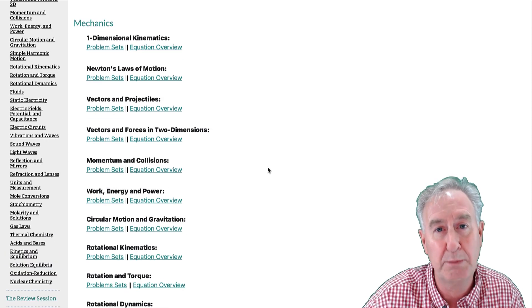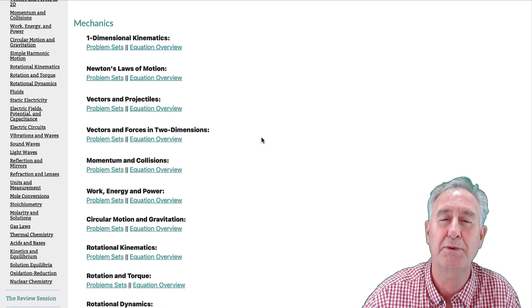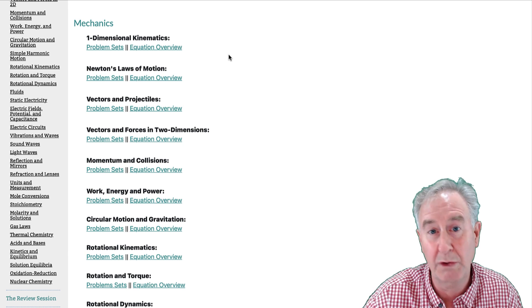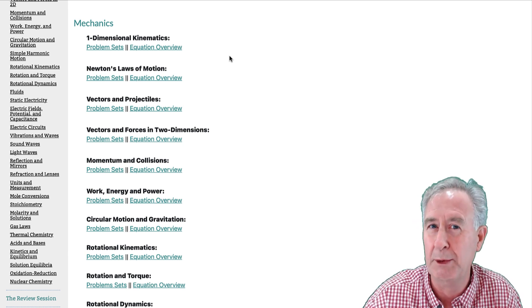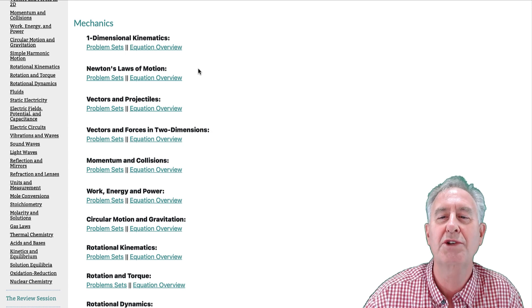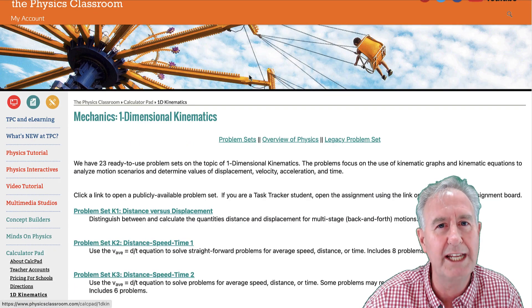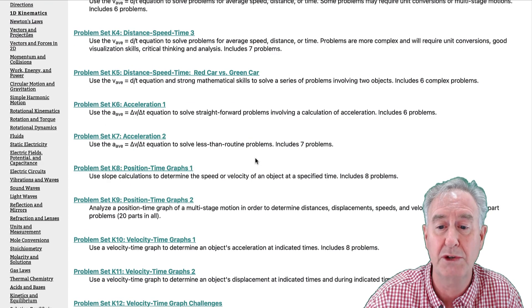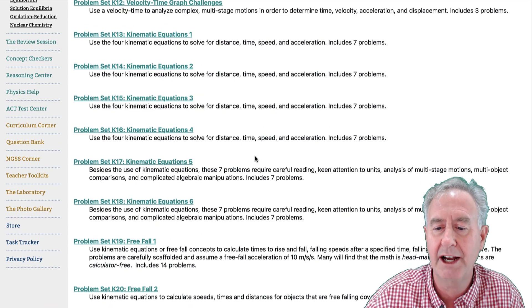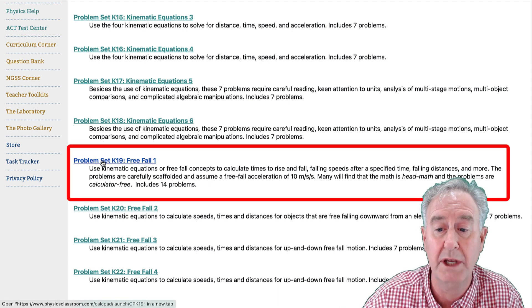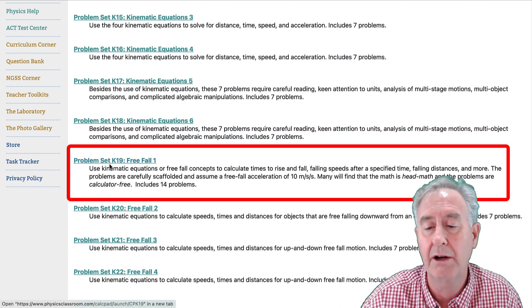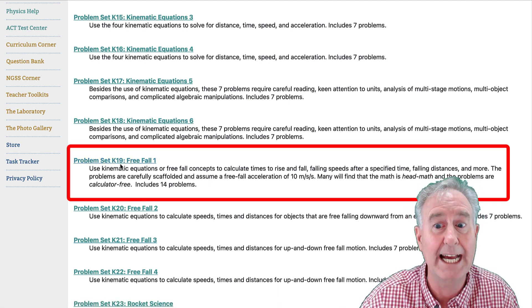This bank of problems forms a great resource for you to create your own problem set. So in order to do so, you need to find what problems you wish to use. I'm going to begin by just going to 1D Kinematics and we have 23 problem sets. I'm getting ready to do some lessons on free fall. And here's problem set K19 free fall. Make a note, it's set K19. That's how we name it on free fall.